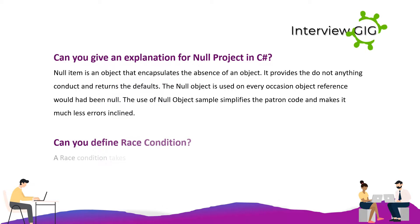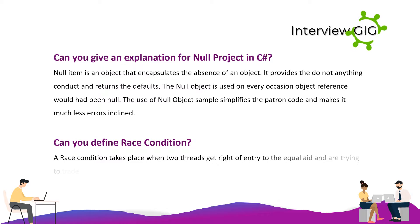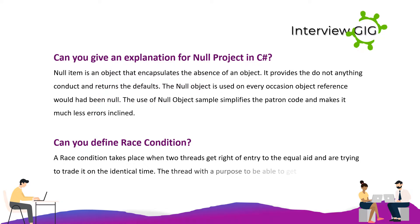What is a race condition? A race condition occurs when two threads access the same resource and try to change it at the same time. The thread that will be able to access the resource first cannot be predicted.